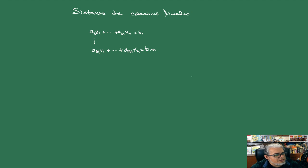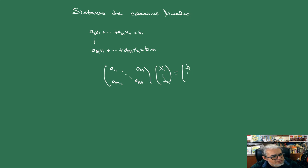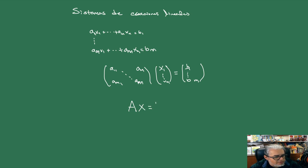O bien, escrito en forma matricial: la matriz A con entradas a₁₁ hasta aₘₙ multiplicada por el vector x = (x₁,...,xₙ) igual al vector b = (b₁,...,bₘ). En corto, podríamos escribirlo como Ax = b. ¿Cómo encontramos la solución de este sistema?